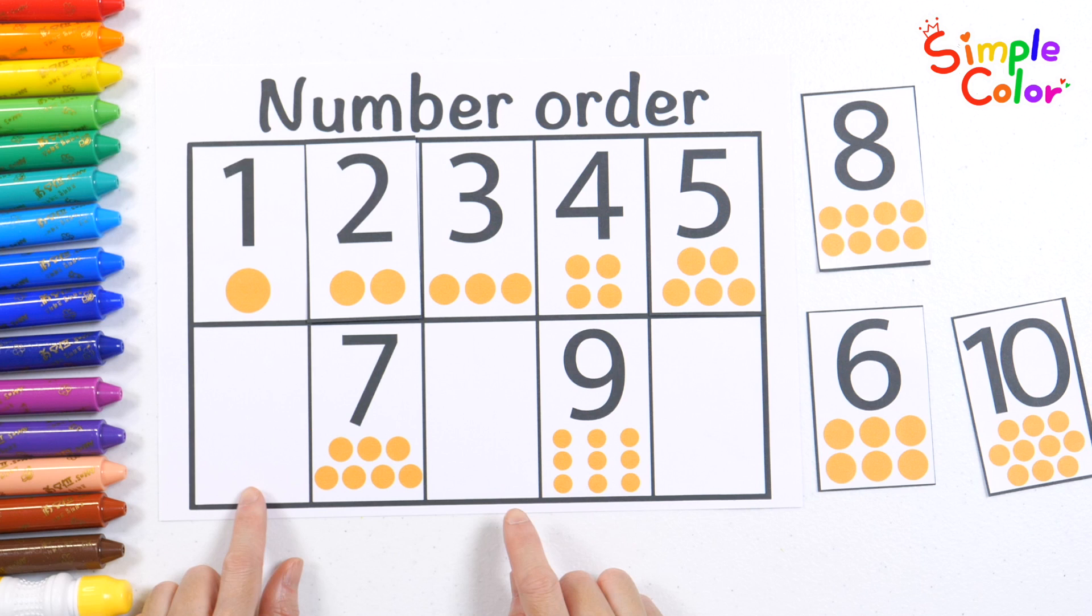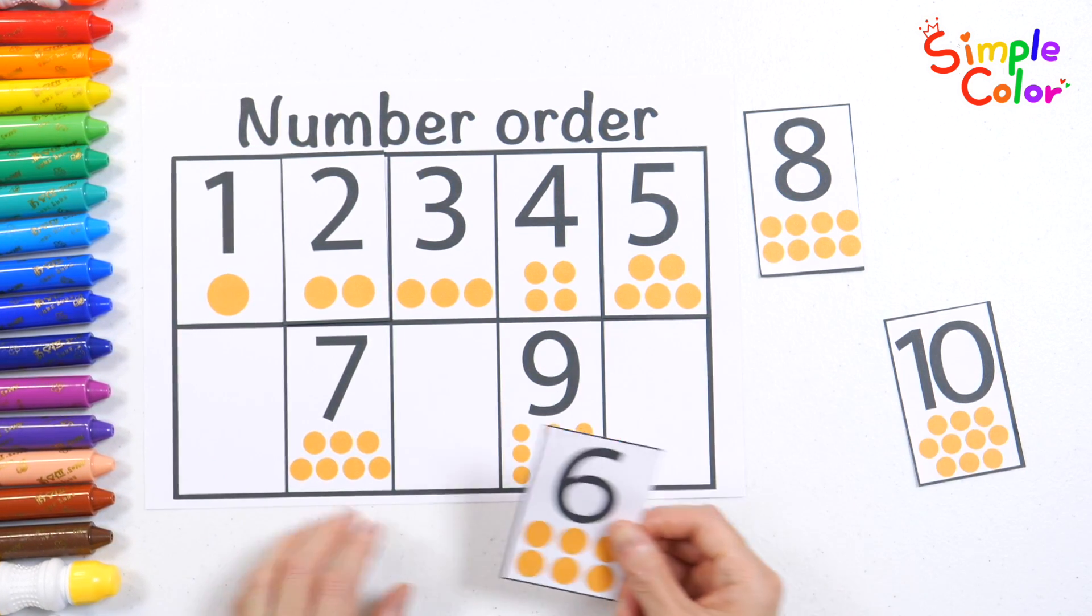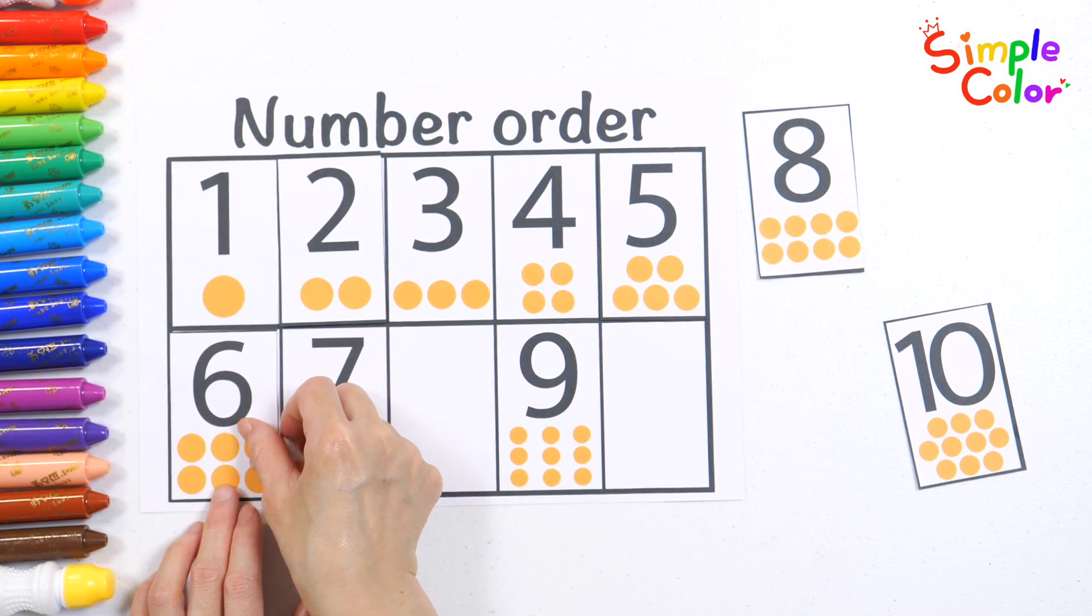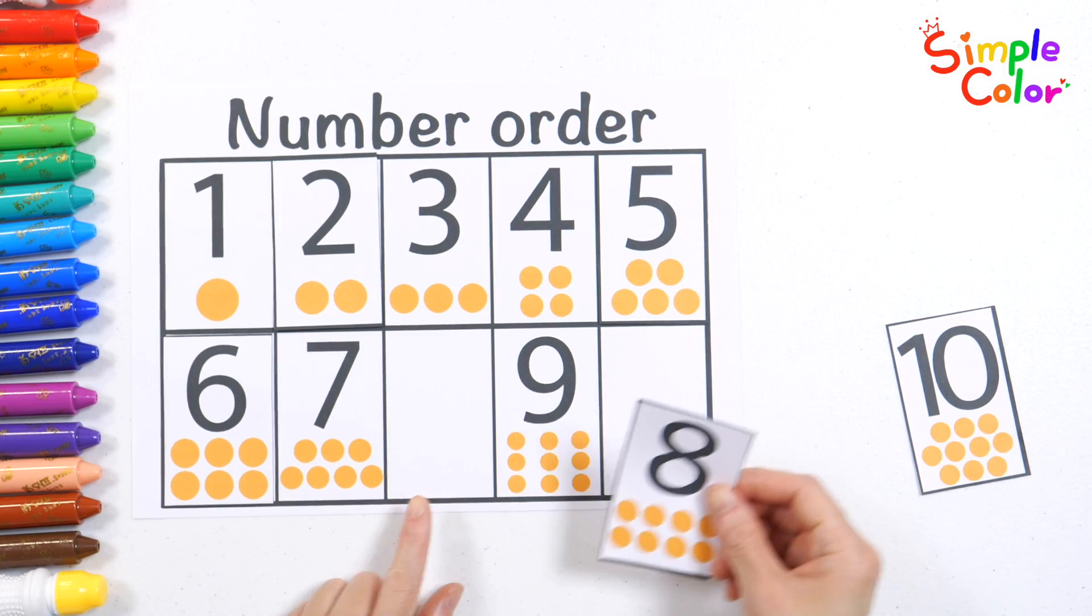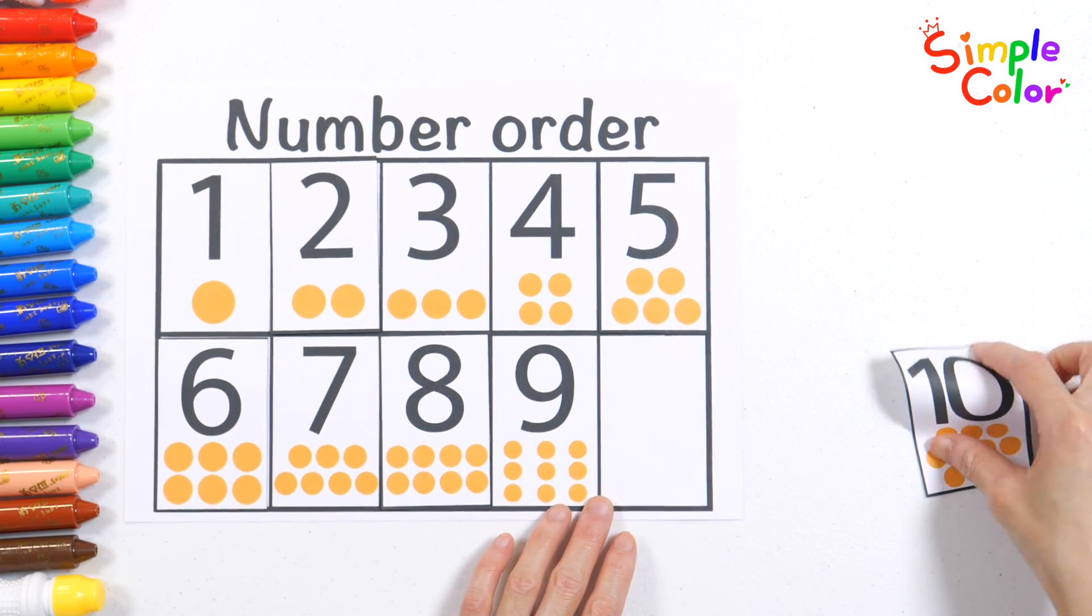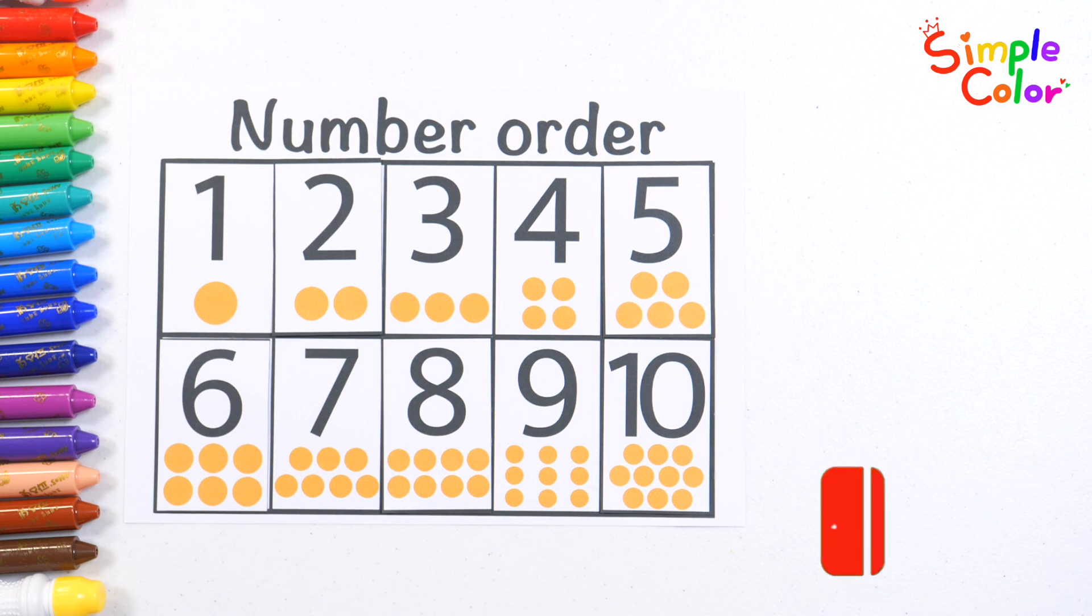Do you know what number goes here? It's 6. Between 7 and 9 is 8. And last but not least, it's 10. Now all our numbers are in order.